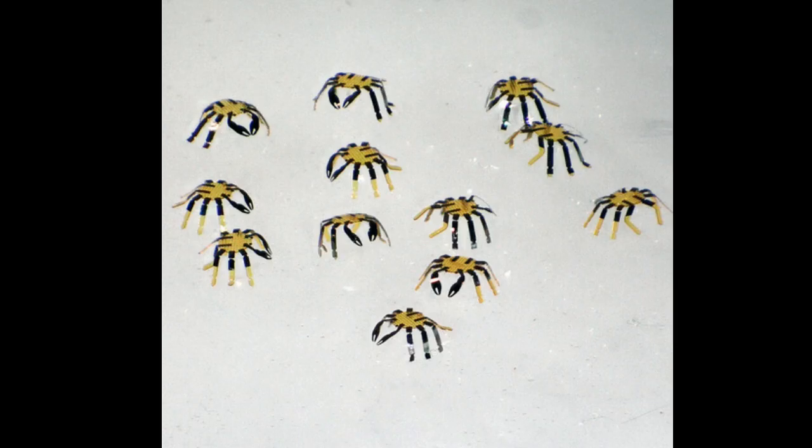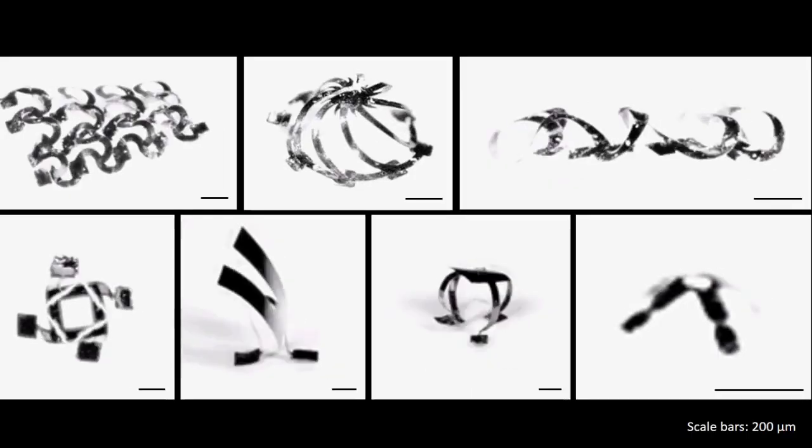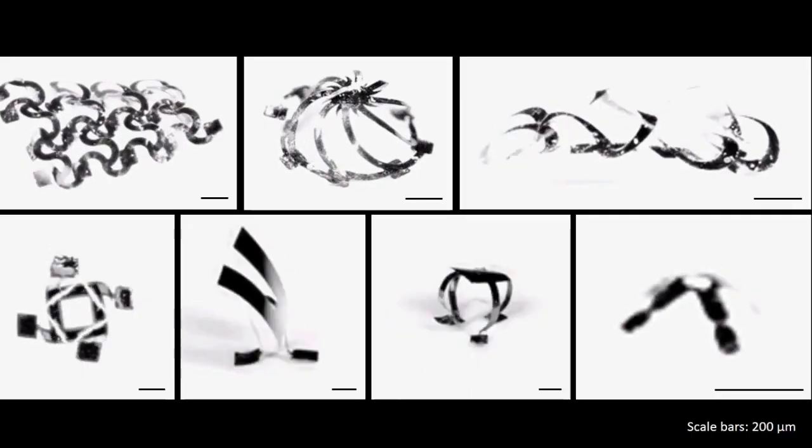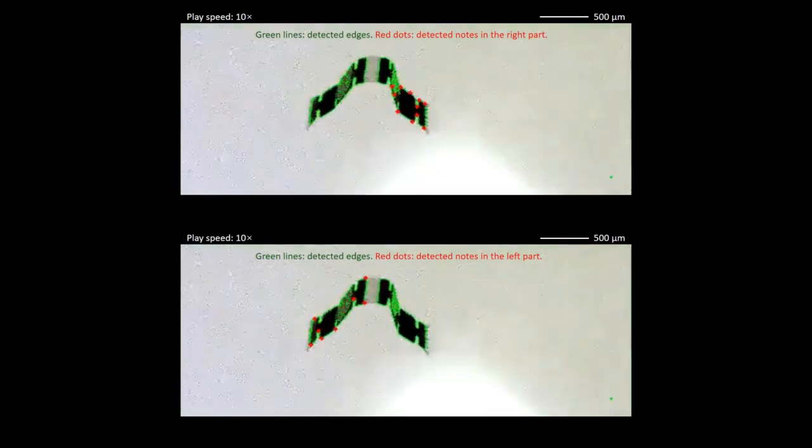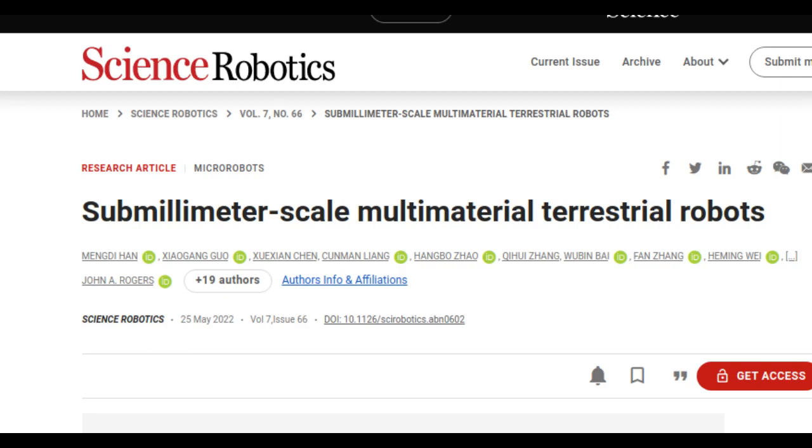The researchers also developed millimeter-sized robots resembling inchworms, crickets, and beetles. Although the research is exploratory at this point, the researchers believe their technology might bring the field closer to realizing micro-sized robots that can perform practical tasks inside tightly confined spaces. The research is published in the journal Science Robotics.